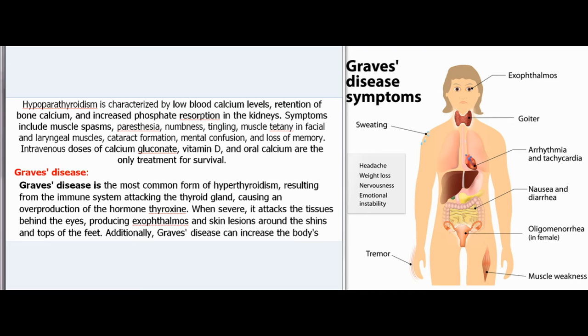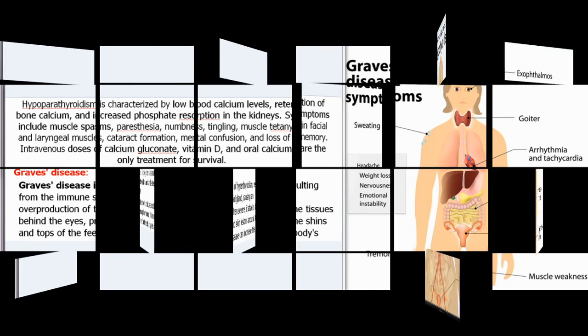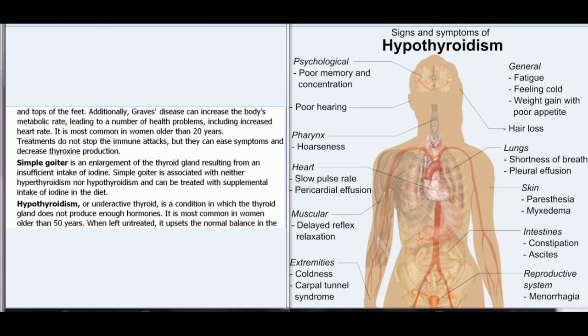Graves' disease is the most common form of hyperthyroidism, resulting from the immune system attacking the thyroid gland and causing an overproduction of the hormone thyroxine. When severe, it attacks the tissues behind the eyes, producing exophthalmos and skin lesions around the shins and tops of the feet. Additionally, Graves' disease can increase the body's metabolic rate, leading to health problems including increased heart rate. It is most common in women older than 20 years. Treatments do not stop the immune attacks but can ease symptoms and decrease thyroxine production.